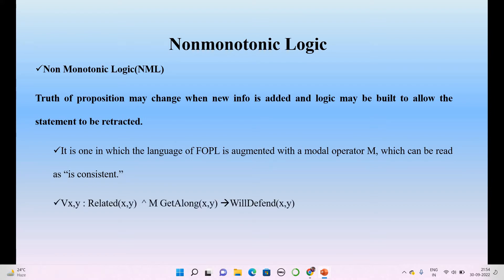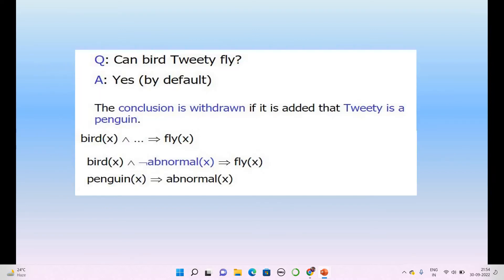There is a small example: for all x, y — related(x,y) and get_along(x,y) — that will defend(x,y). Another example: can bird Tweety fly? Yes, by default Tweety can fly. But the conclusion is withdrawn if we add another statement — suppose we add: Tweety is a penguin. Can a penguin fly? No.